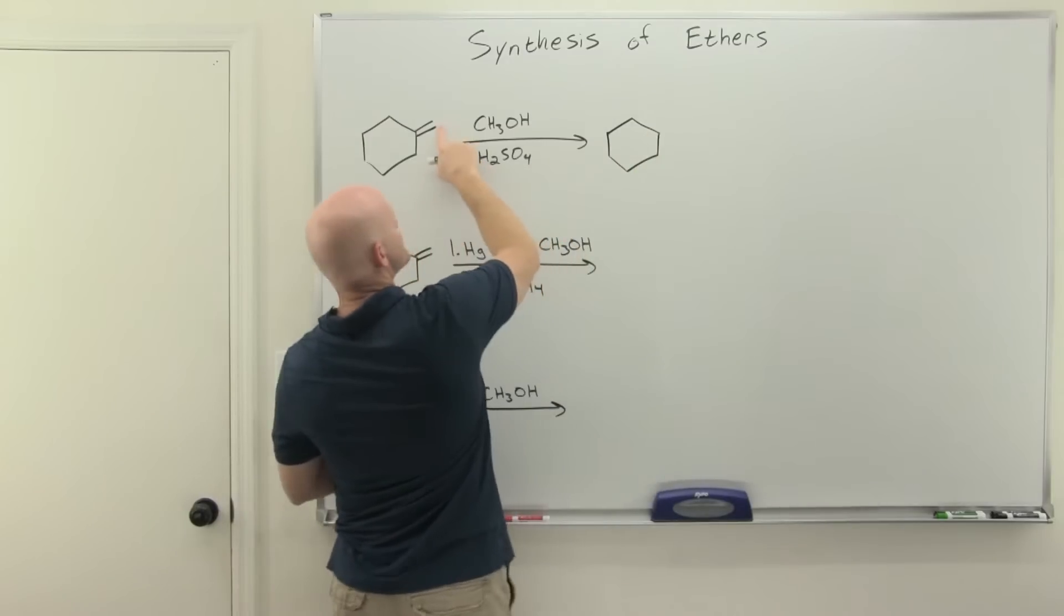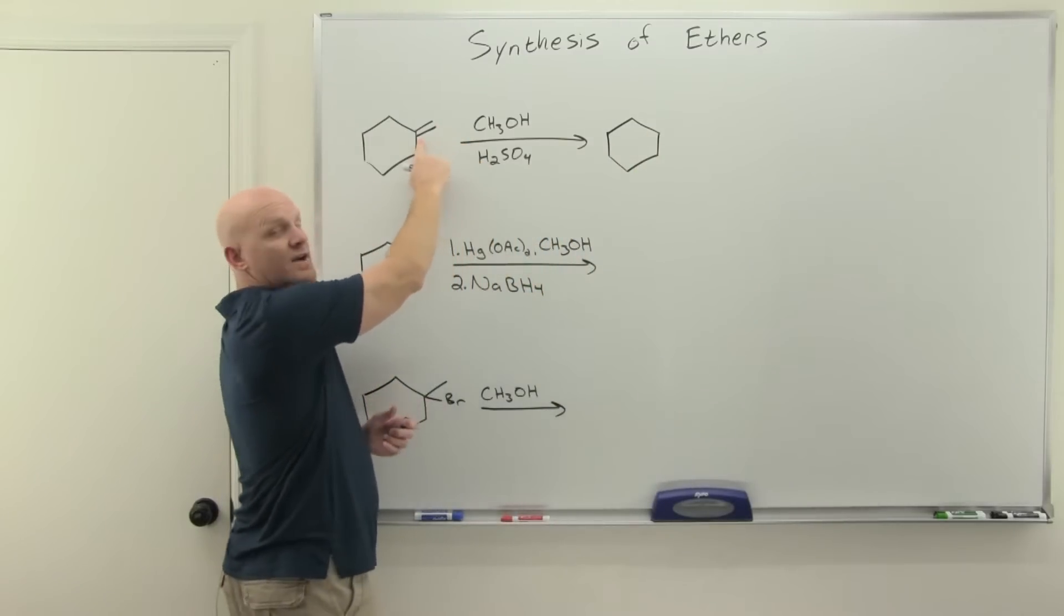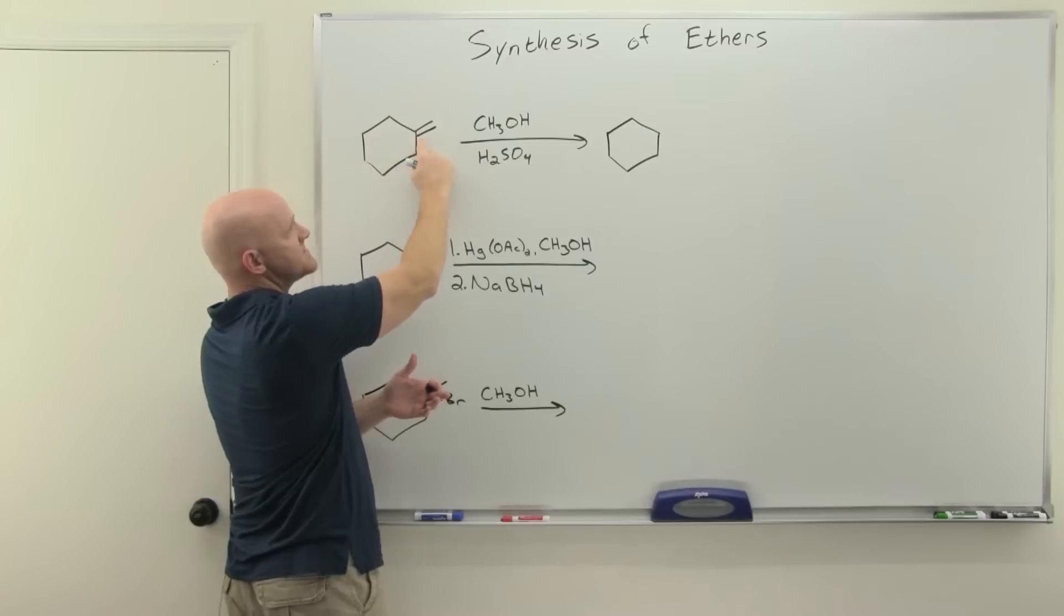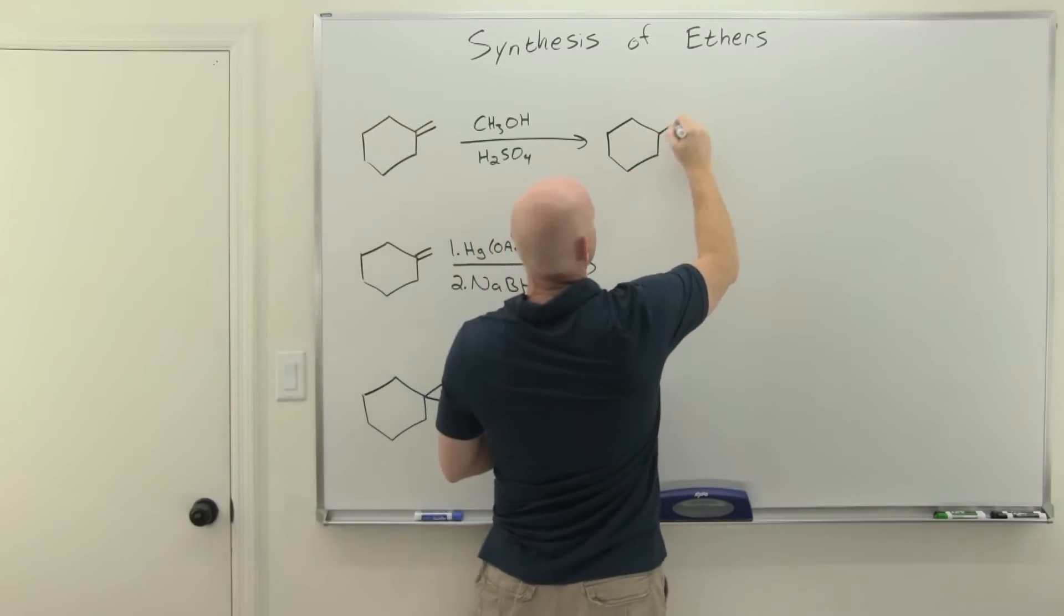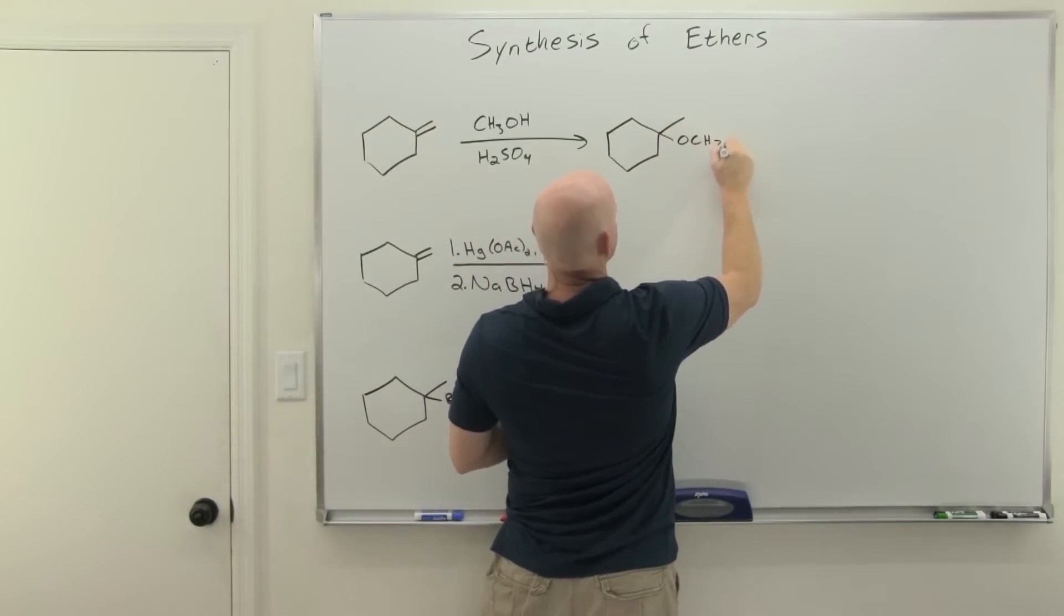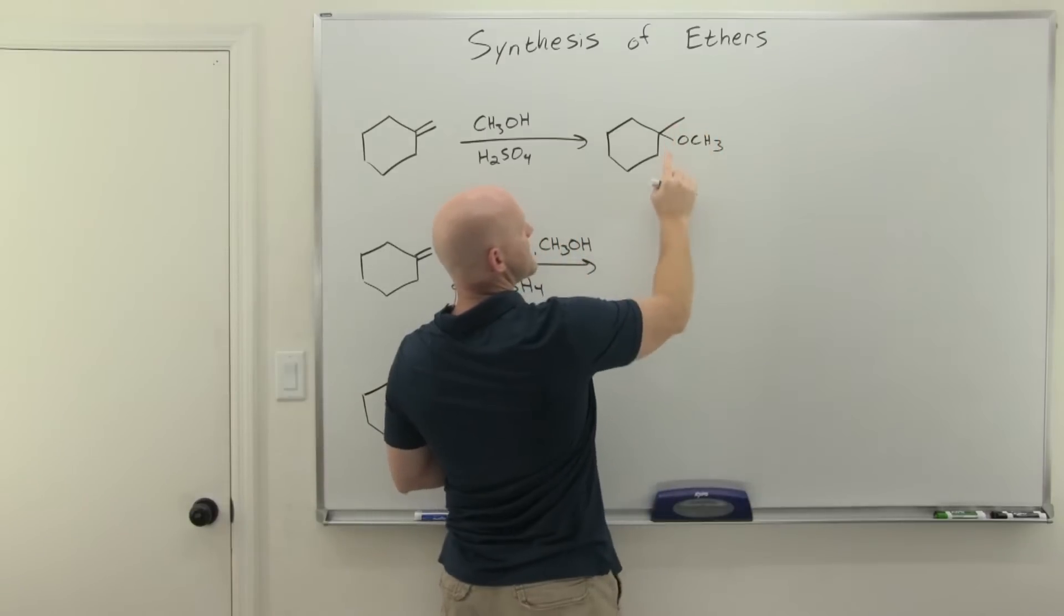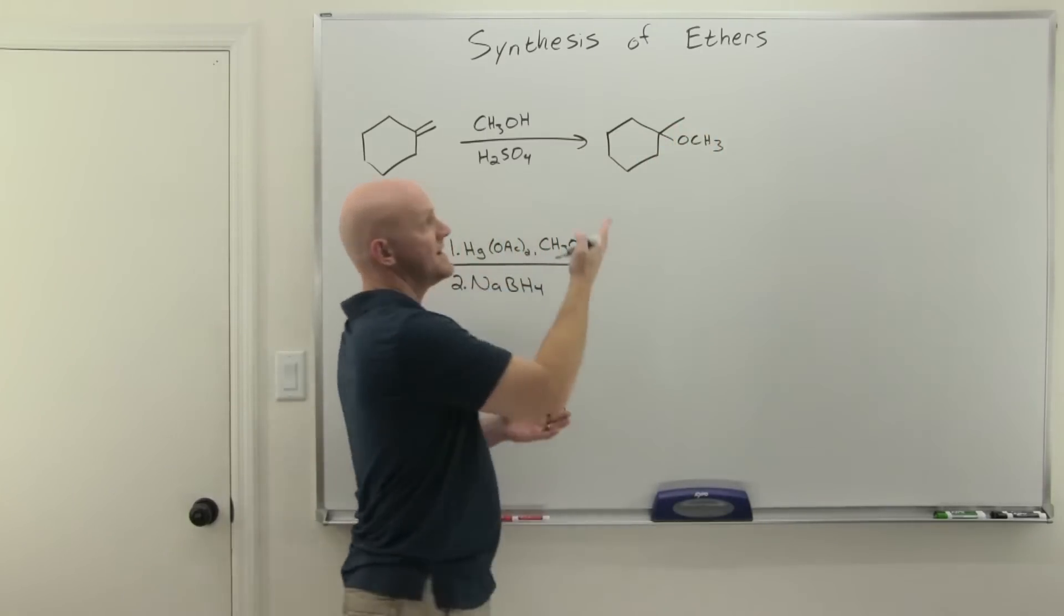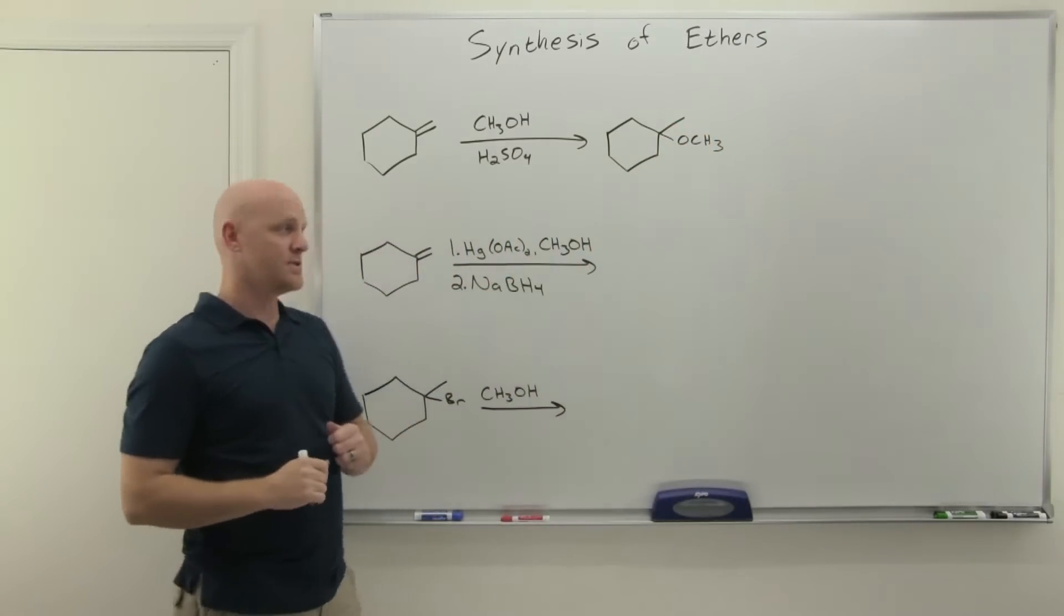So in this case, we're going to add an H to the less-substituted side. You get the more-substituted carbocation, which could rearrange. Well, in this case, it's tertiary. And so we're going to get an OCH3 on the more-substituted carbon. So again, H on the less-substituted side, OCH3 on the more-substituted side, and we've formed an ether in this case.